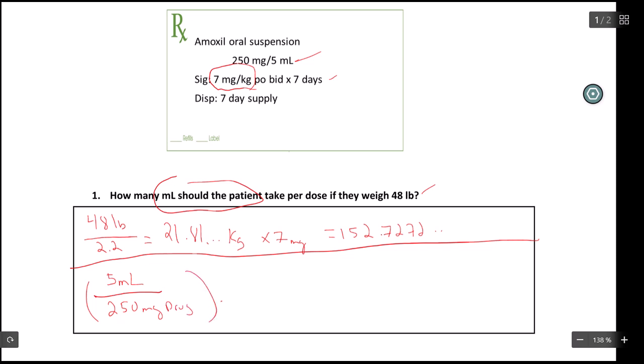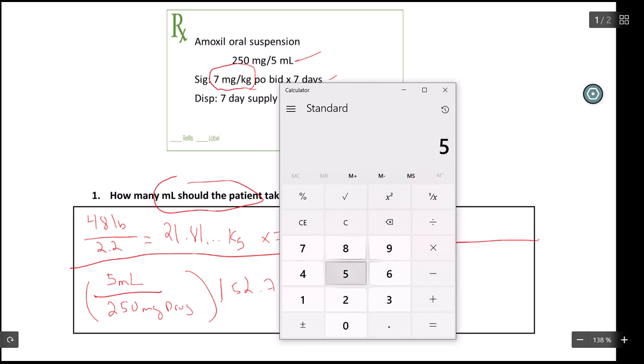If you know that you want to give the patient 152.7272 milligrams per dose, this is the amount of milligrams per dose, what is their dose? So every teaspoon of this antibiotic suspension gives you 250 mg. If I want to give a dose of 152.7272, I'm looking at about 3.05.